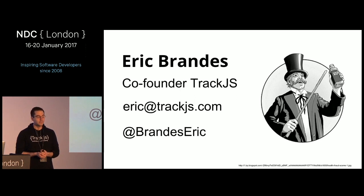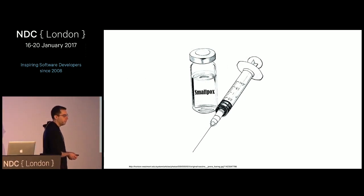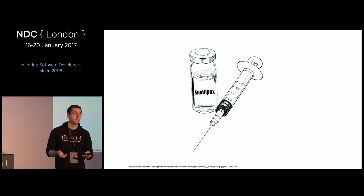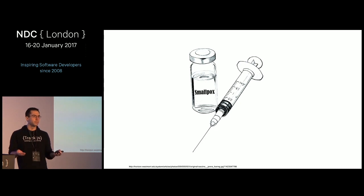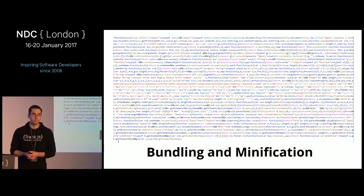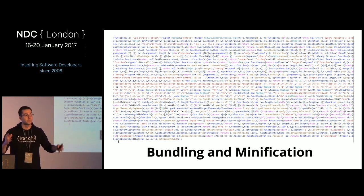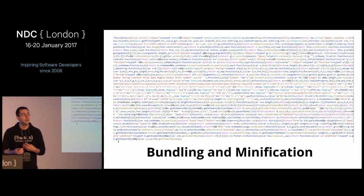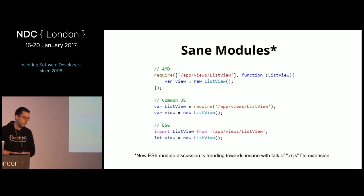Like Victorian-era medicine, there were some good ideas back then — for example, the smallpox vaccine saved hundreds of millions of people. We've got similar good ideas in JavaScript. Bundling and minification is a good idea: we take all of our disparate scripts, put them in one file to save on requests, minify them to save bytes over the wire, so scripts load faster and the user experiences the page faster.